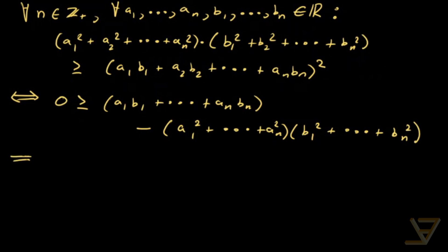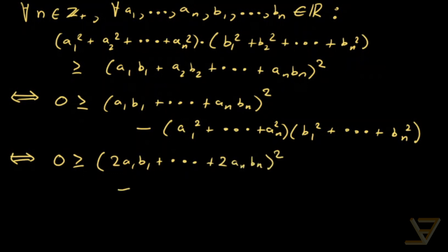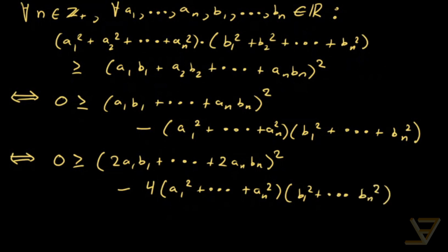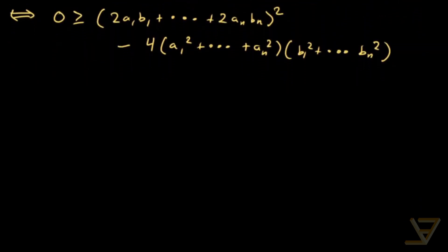Now what we're going to do is multiply through by 4. There should be a square over here, so we absorb it into the first term. We get 2a1b1 all the way through to 2anbn, squared. And over here we just leave it on the outside, so we get a1 squared all the way through to an squared, times b1 squared all the way through to bn squared. At this point you might notice this is in the form of p squared minus 4qr.